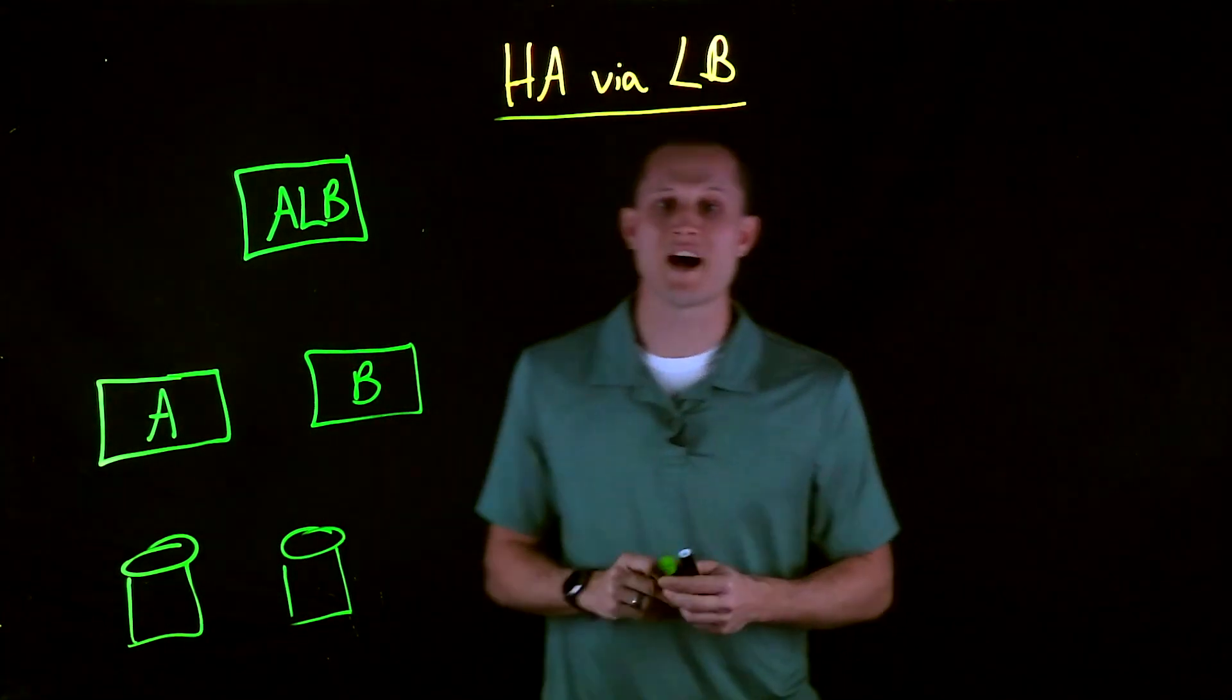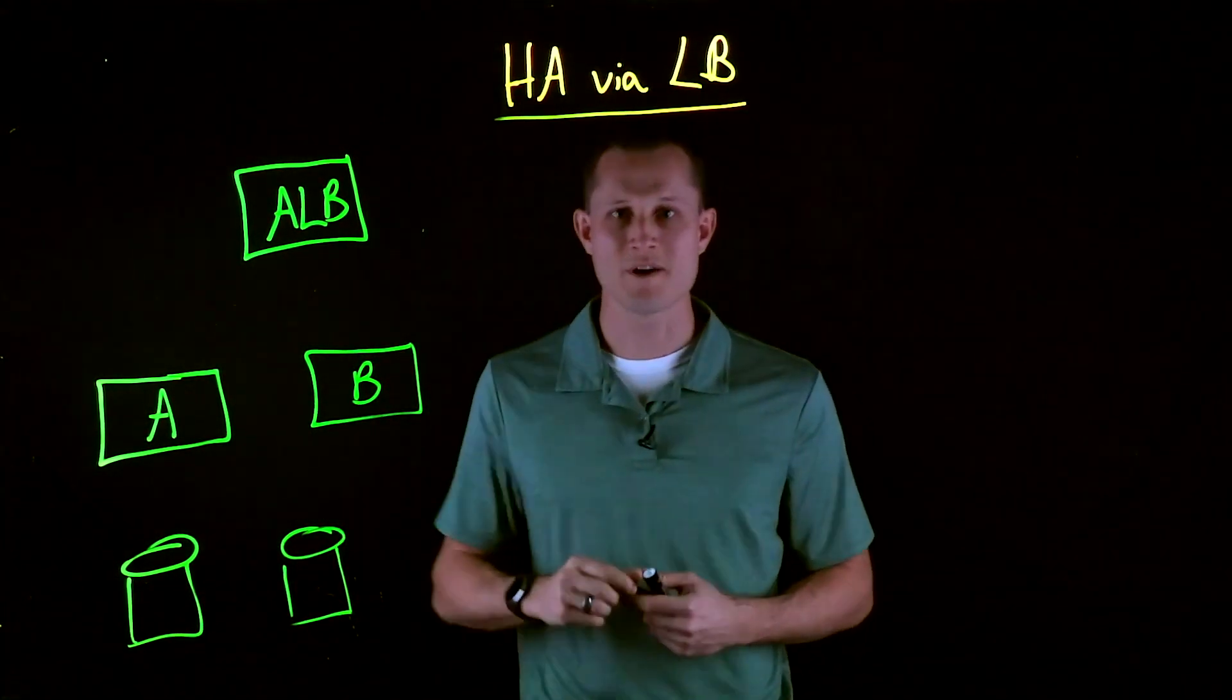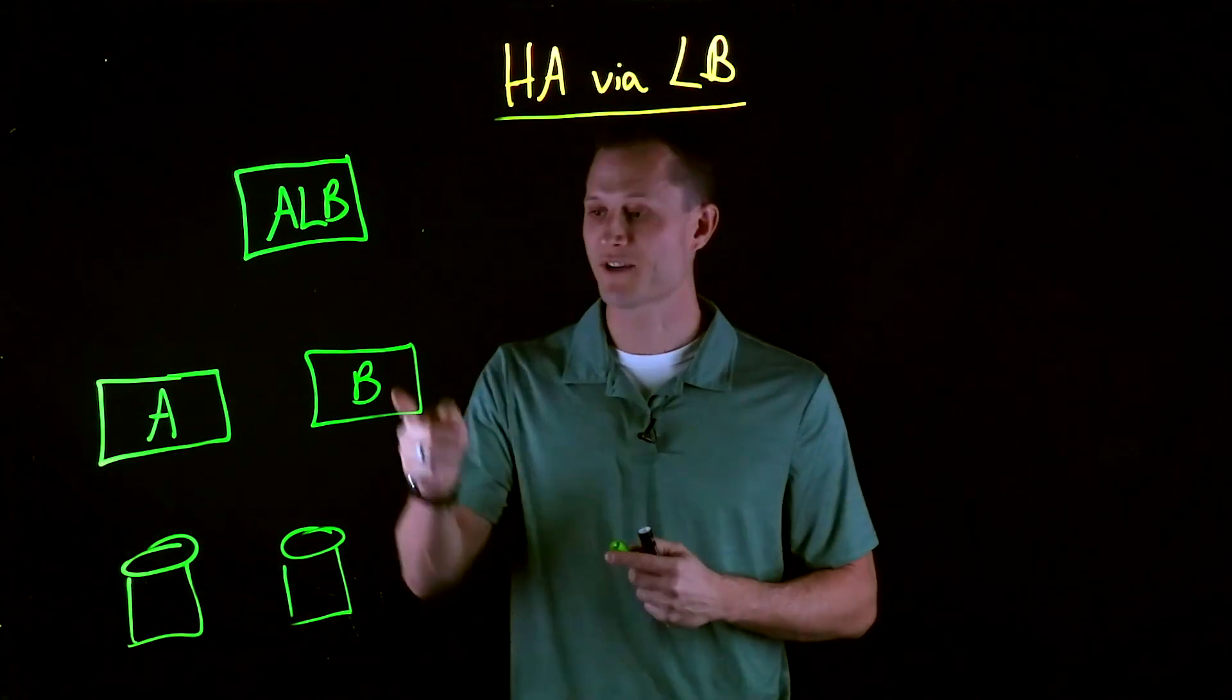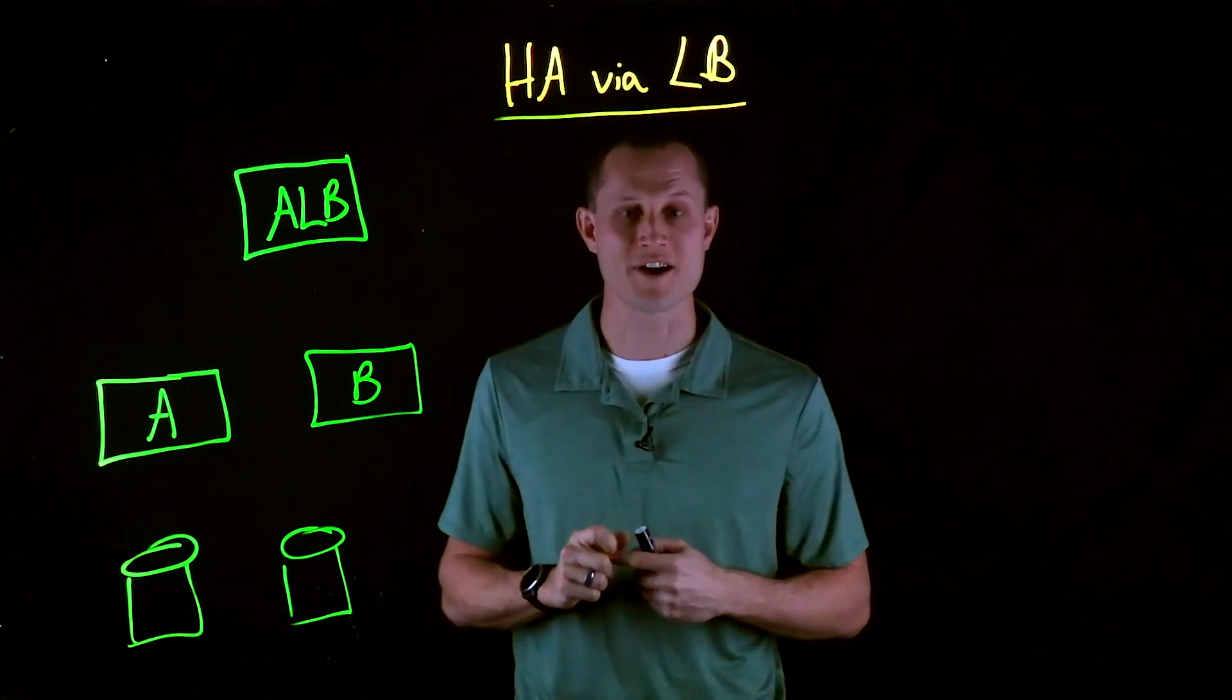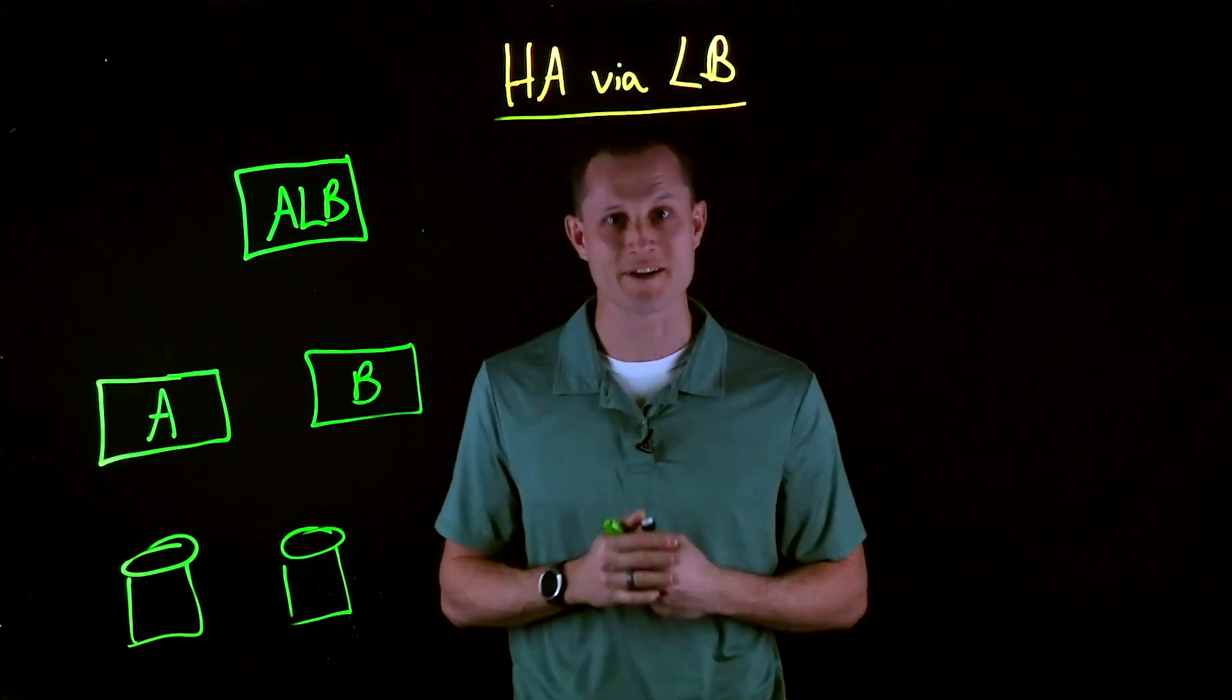And before we get into the IP configurations, one main requirement of this is that you require SNAT to be configured on the virtual server listener. Otherwise, this is going to result in asymmetrical traffic.